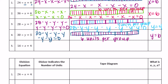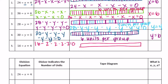And the last one: 16 divided by Z equals 4. So we're going to have 16 minus four Z's is equal to zero. I'll separate it into four groups, and 16 divided by 4 is 4, so there are four in each group. Which means Z equals four.